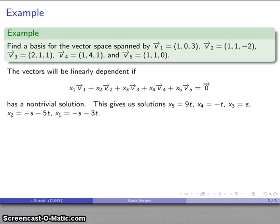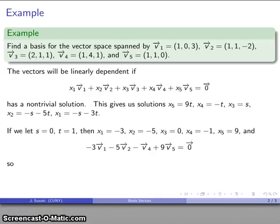I don't need that matrix anymore. I'll slide my solutions up there. And, well, if I let, I have two free variables, t and s. If I let s be 0 and t be 1, then I get the solutions x1 equals 3, x2 equals negative 5, and so on. And I get this equation here.